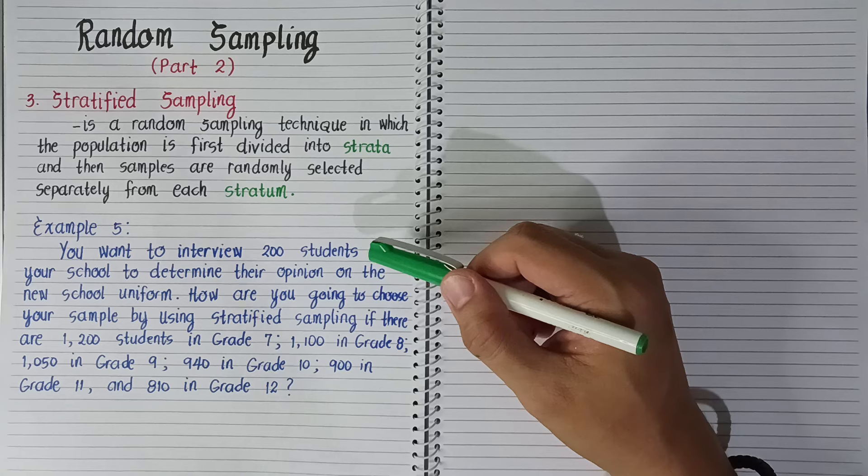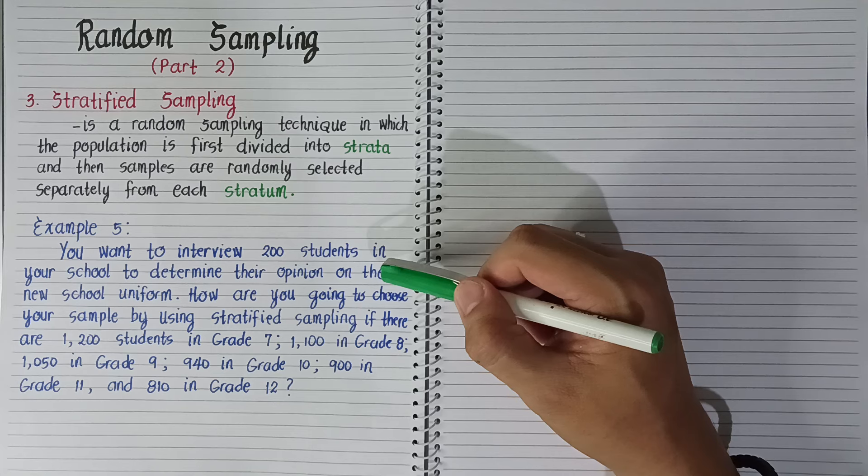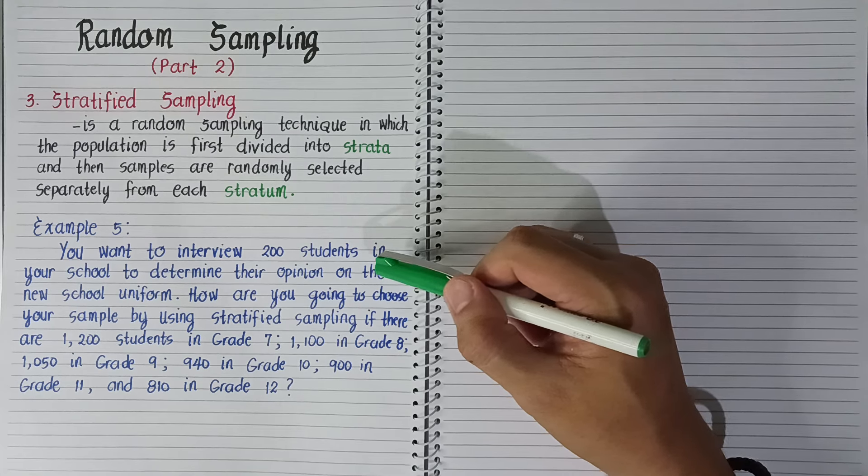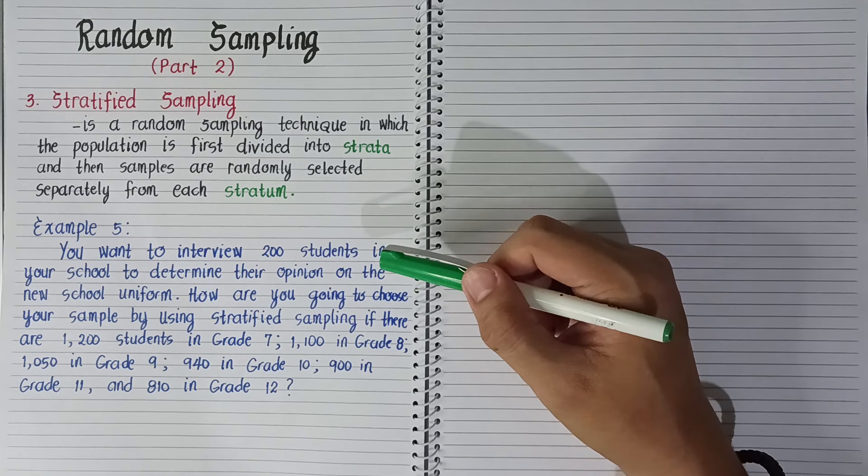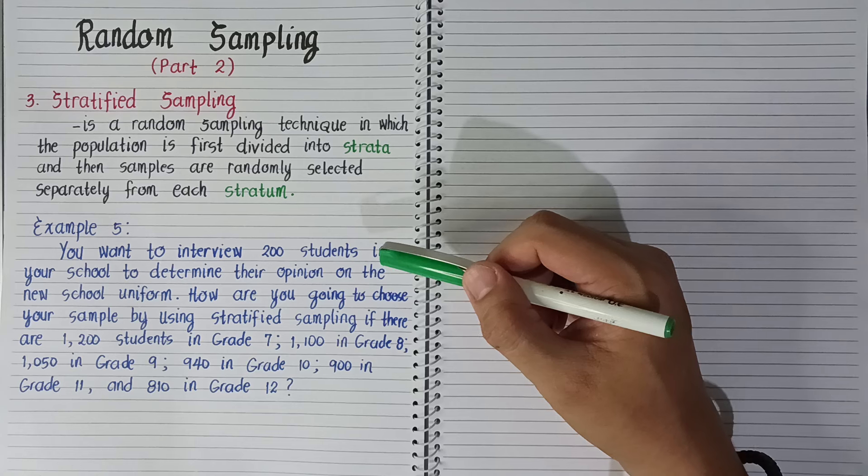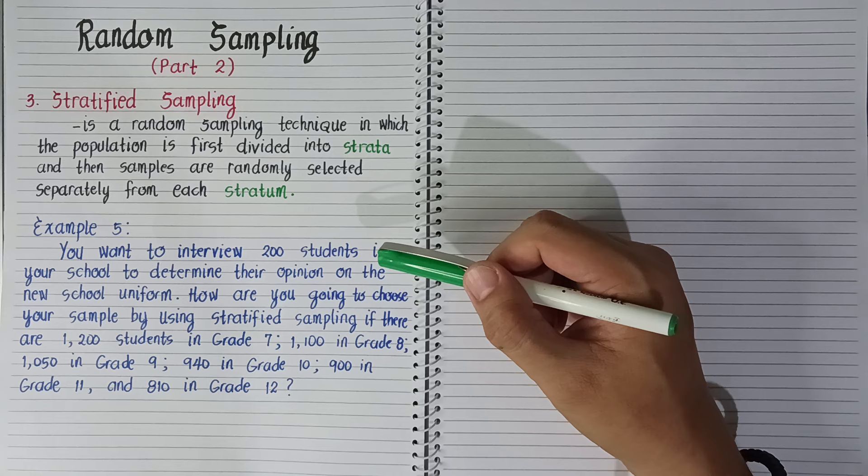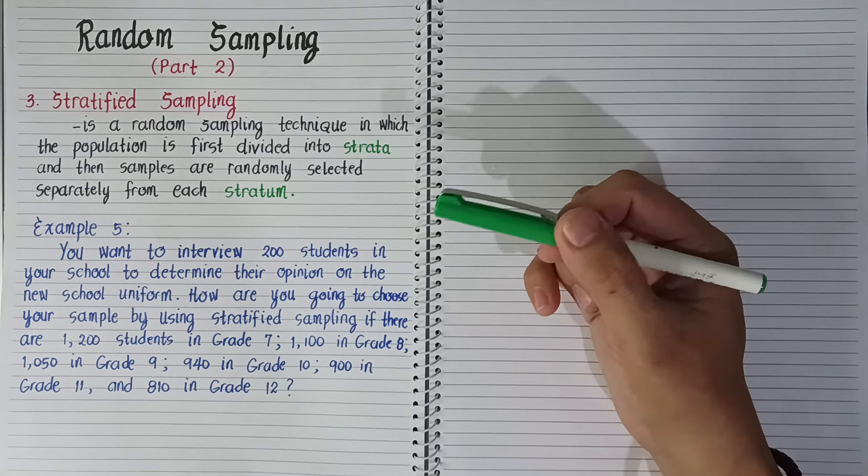For instance, we can stratify by grade level—grade 1, grade 2, grade 9, grade 8. We can also use gender, school type like public school and private school, age, and educational attainment.